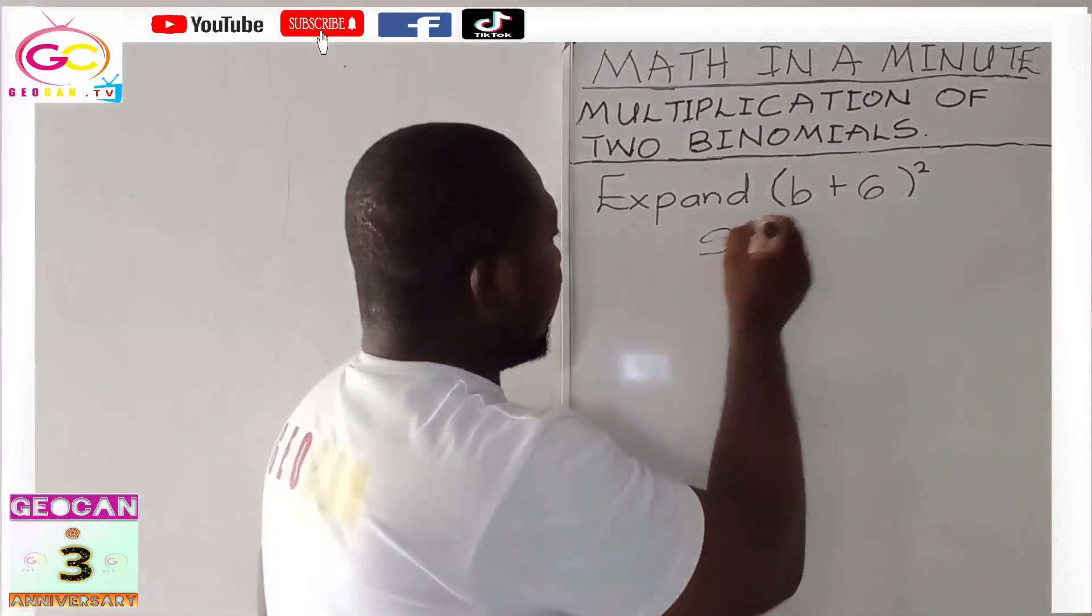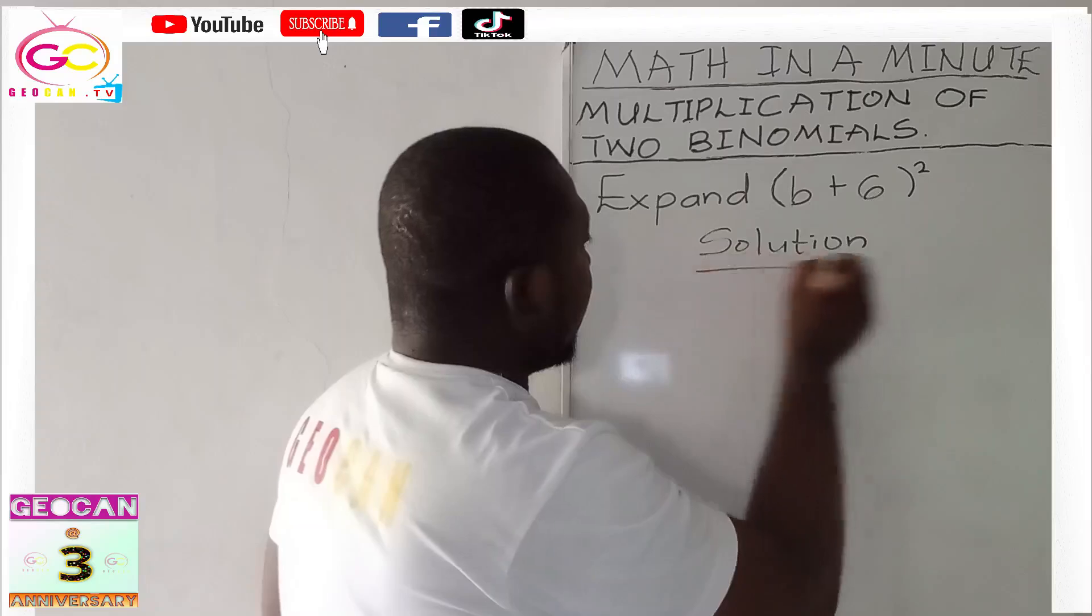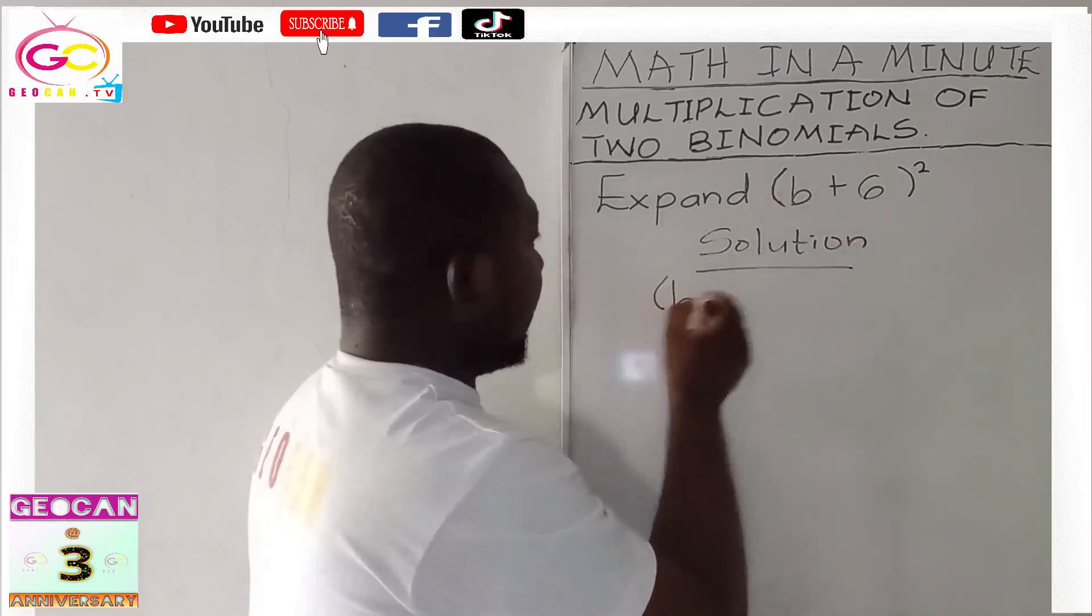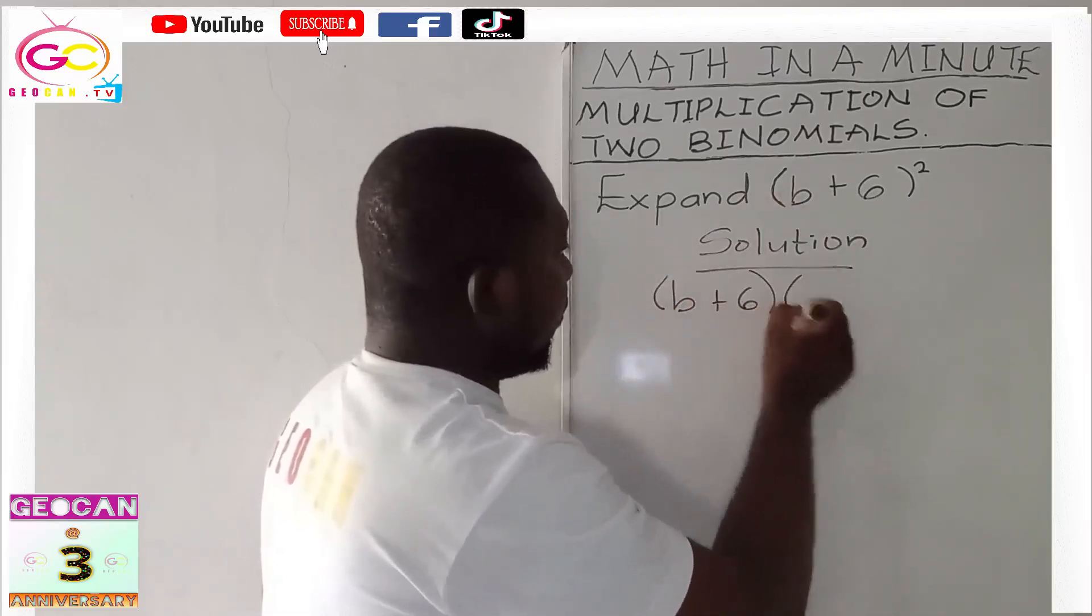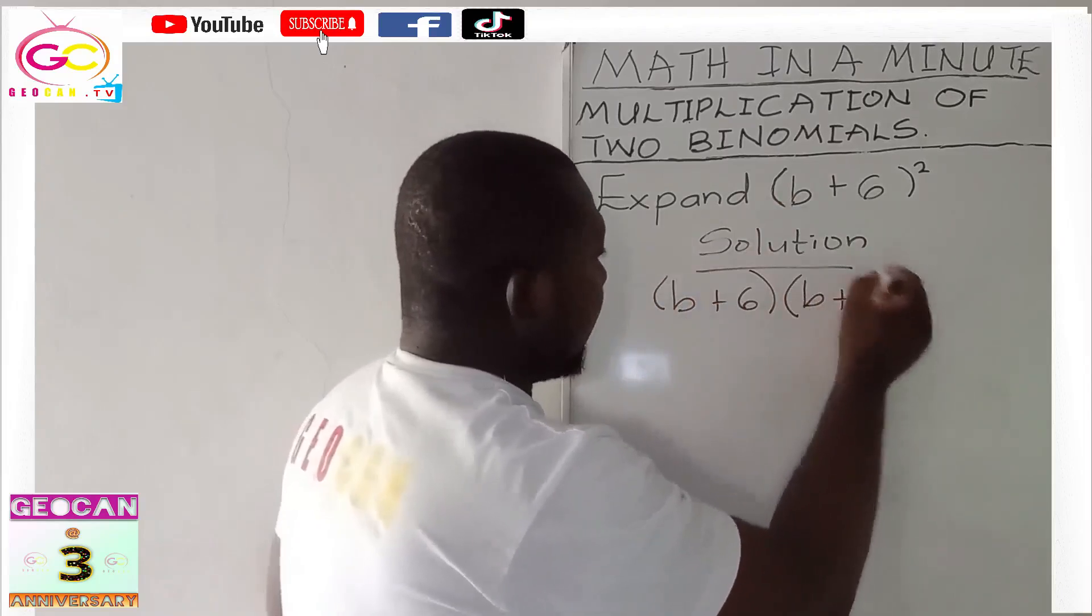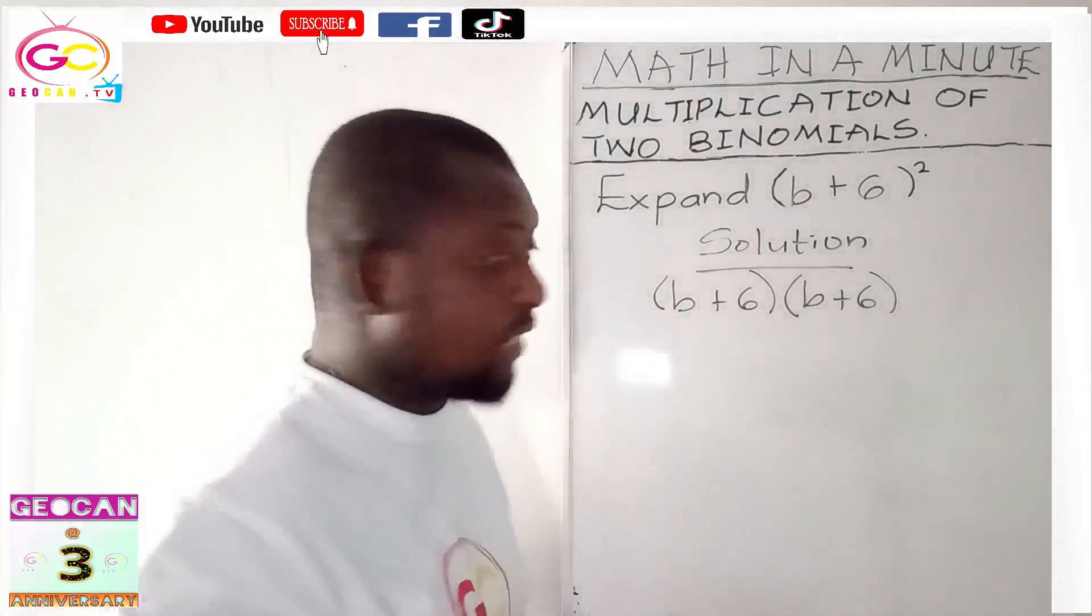So let's have our solution. We have (b+6) and (b+6). It's multiplying itself twice.